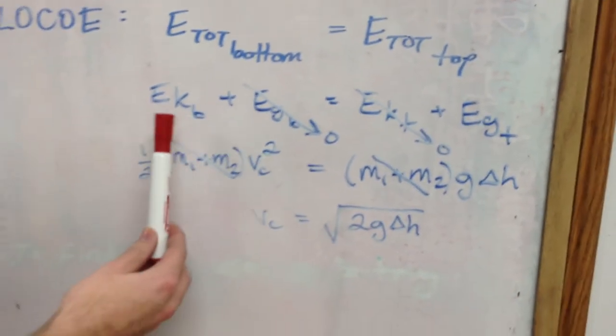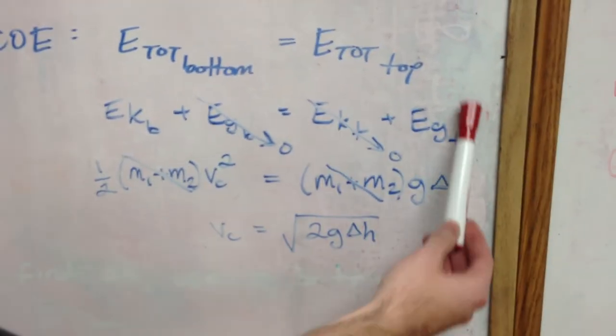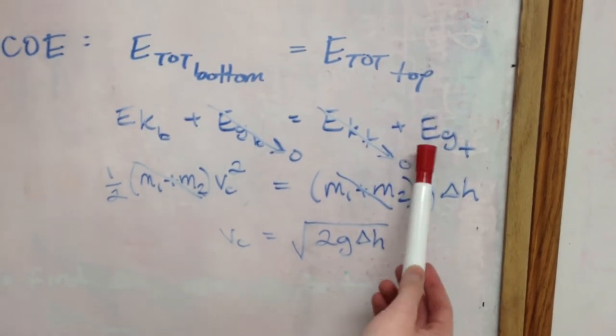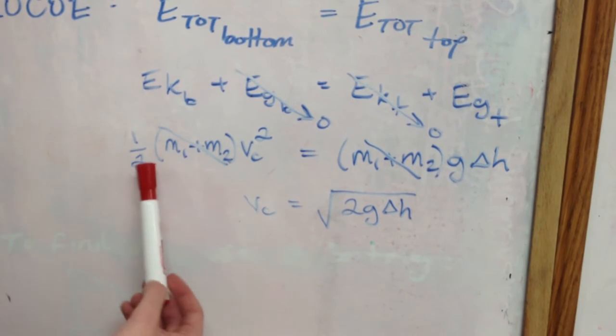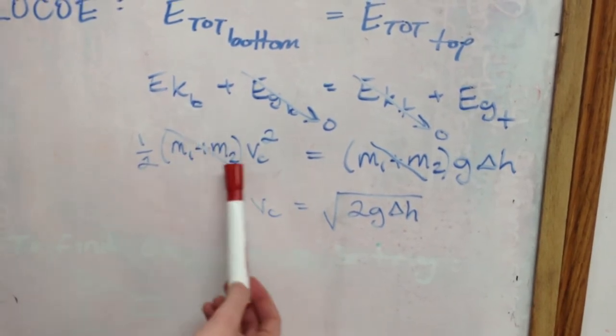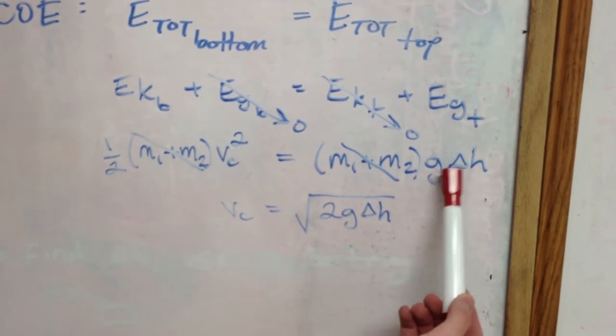So you're left with equating the kinetic energy of the box in the beginning equals the potential energy of the box at the end. The mathematical formula for this is 1 half combined mass times velocity combined squared equals combined mass times g times h.